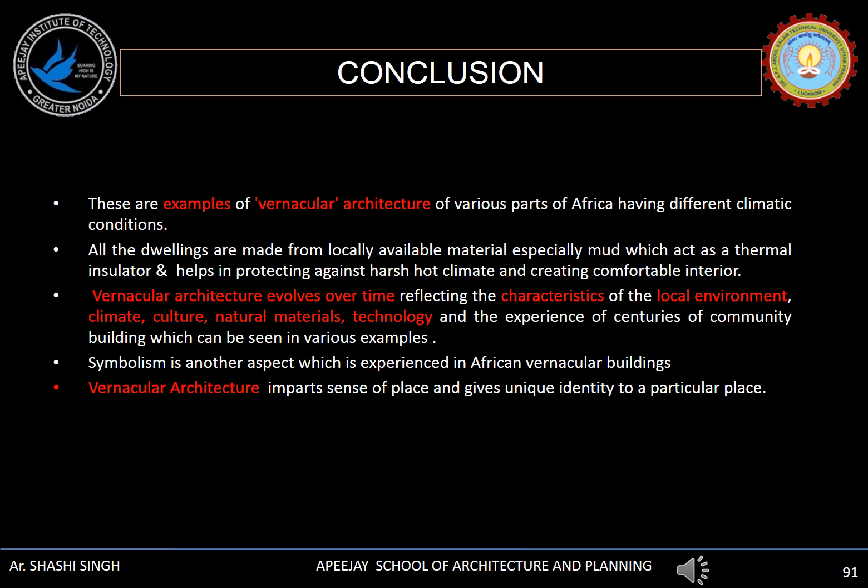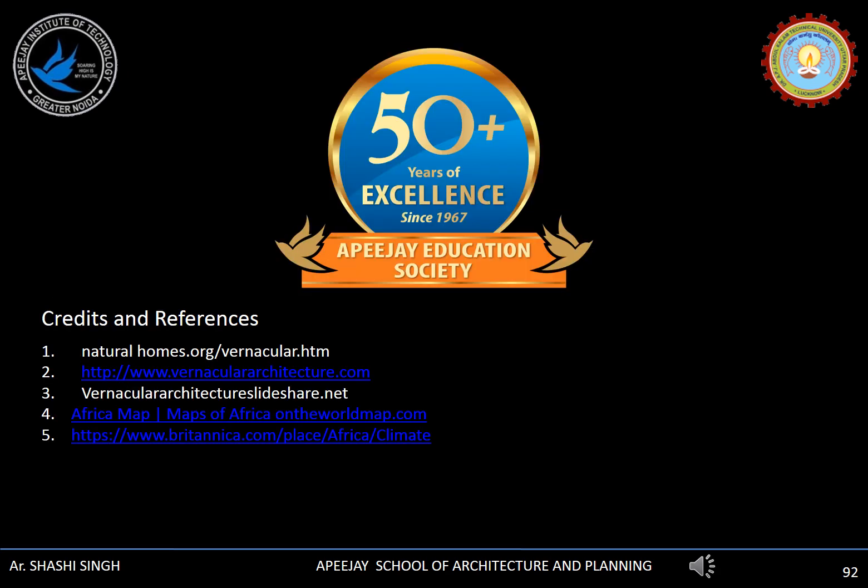In conclusion, these are examples of vernacular architecture of various parts of Africa having different climatic conditions. All the dwellings are made from locally available materials, especially mud, which acts as a thermal insulator and helps in protecting against the harsh hot climate and creating a comfortable interior. Vernacular architecture evolves over time reflecting the characteristics of the local environment, climate, culture, natural materials, artistic technology and the experience of centuries of community building. Symbolism is another aspect experienced in African vernacular buildings. Vernacular architecture imparts a sense of place and gives unique identity to a particular place. Thank you.